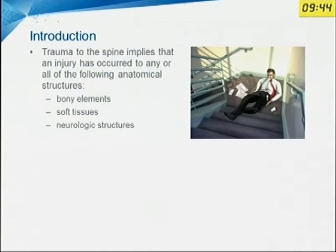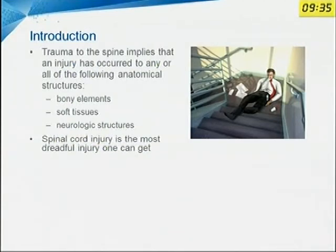Trauma to the spine implies that injury has occurred to any and all of the following anatomical structures: bony elements, soft tissue, and neurologic structures. And spinal cord injury is the most dreadful injury one can get among these.